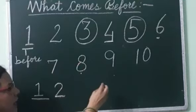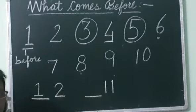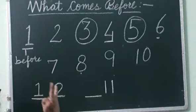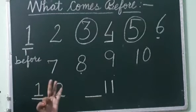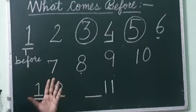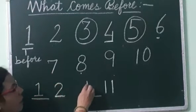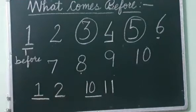If teacher asks you what comes before 11, you have to start counting till 11: 1, 2, 3, 4, 5, 6, 7, 8, 9, 10, 11. What did you say before 11? 10. So what comes before 11? 10. What we say before, that is the before number.